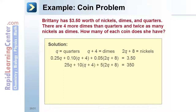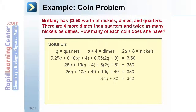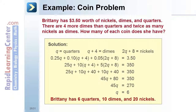Multiply all monetary values by 100 to eliminate decimals, then distribute to remove parentheses: 25q plus 10q plus 40 plus 10q plus 40 equals 350. Combine like terms to get 45q plus 80 equals 350. Subtract 80 from both sides, then divide by 45 to get q equals 6. Substituting back, Brittany has 6 quarters, 10 dimes, and 20 nickels.